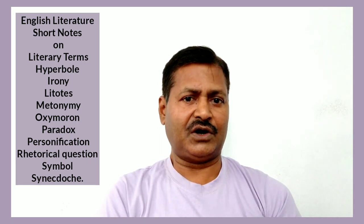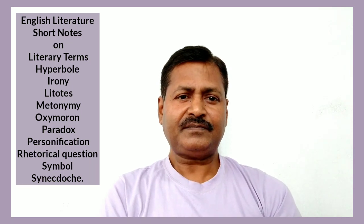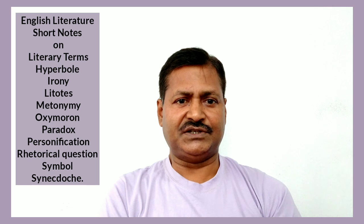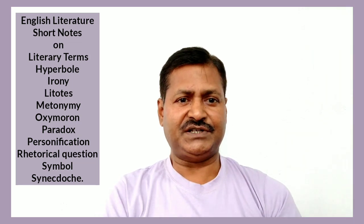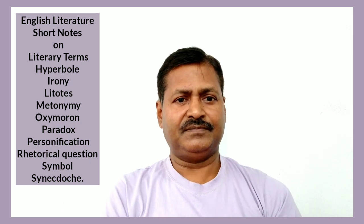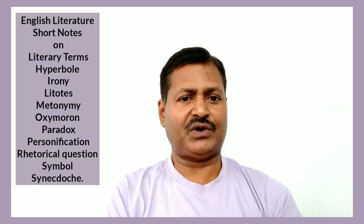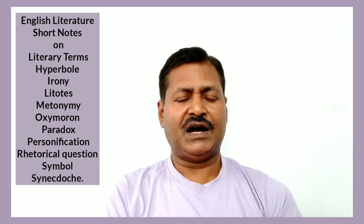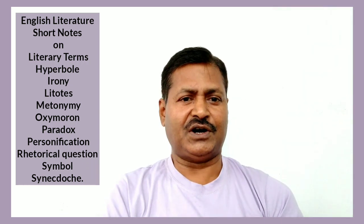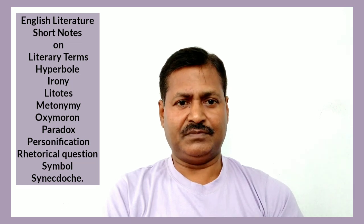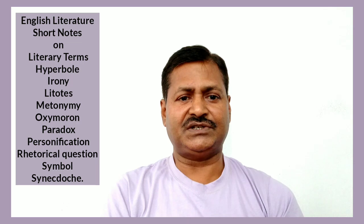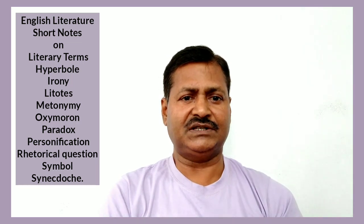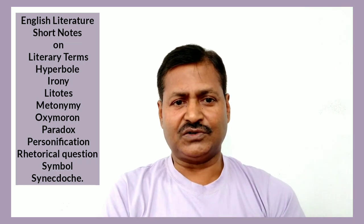Irony may also be situational, when the occurrence goes contrary to the expectation. For example, in Shelley's 'Ozymandias,' the following lines suggest the irony of the situation: 'My name is Ozymandias, King of Kings. Look on my works, ye mighty, and despair.' This inscription on the pedestal turns ironic because now Ozymandias' pride is gone and his broken statue stands in a lonely desert. Irony may also suggest opposite character, as in Shakespeare's Macbeth: 'There's no art to find the mind's construction in the face.' Duncan says this about the Thane of Cawdor, but it is actually applicable to Macbeth, who kills Duncan only after a few hours. This is called dramatic irony.